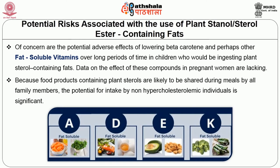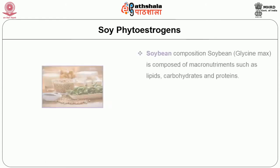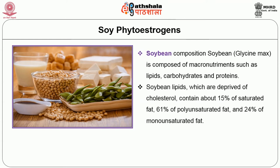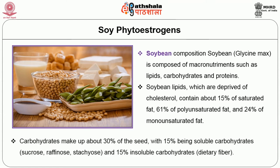Soy foods are rich sources of phytoestrogenic compounds. Soybean composition includes both macronutrients and micronutrients. Macronutrients include lipids, carbohydrates, and proteins — present at among the highest ranges possible in the legume family. Soybean lipids, which are devoid of cholesterol, contain about 15% saturated fat, 61% polyunsaturated fat, and 24% monounsaturated fat. Carbohydrates make up about 30% of the seed, with 15% being soluble carbohydrates (sucrose, raffinose, stachyose) and 15% insoluble carbohydrates (dietary fiber).